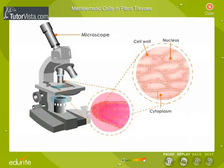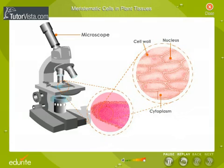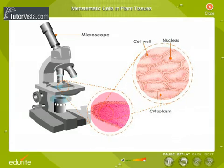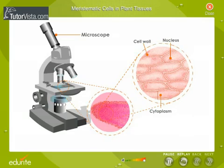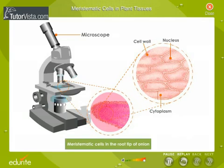Locate the thin-walled cells full of cytoplasm a little above the actual tip of the root. Note the large nucleus. These thin-walled cells in plant tissues are meristematic cells.